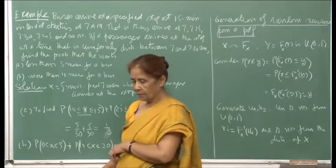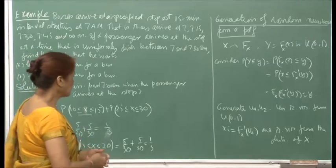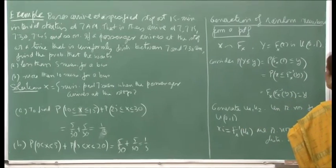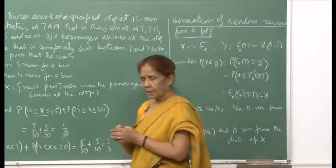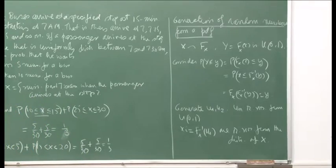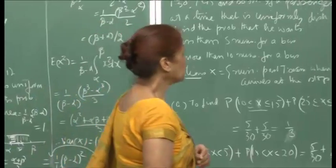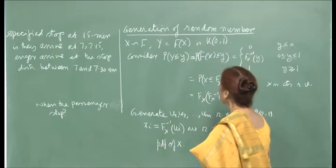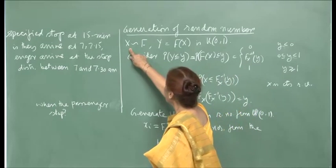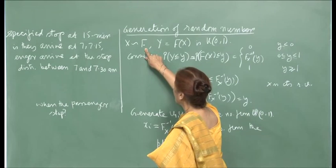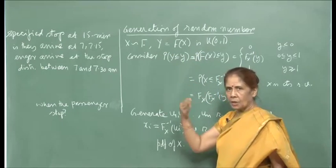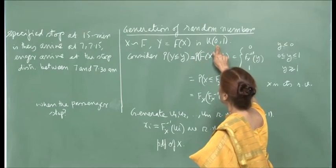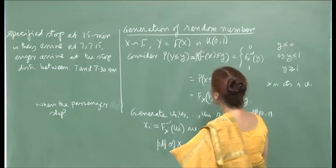An important use of the uniform distribution is in simulation. When generating random numbers from a given PDF, we can use the CDF concept. If X is a random variable with CDF capital F, define the random variable Y = F(X). Then Y is uniform on [0,1]. This is shown by noting that P(Y ≤ y) = P(F(X) ≤ y) equals F(F^{−1}(y)) = y for y in [0,1], and 0 or 1 outside that range.